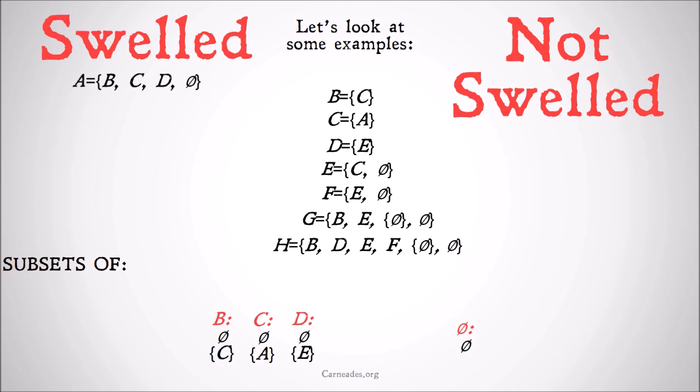What about B? B contains C as a member. The subsets of C are the null set and the set only containing A, which is identical to C. B contains the set only containing A because it contains C and that's what C is identical to. But B doesn't contain the null set, so it is not swelled.